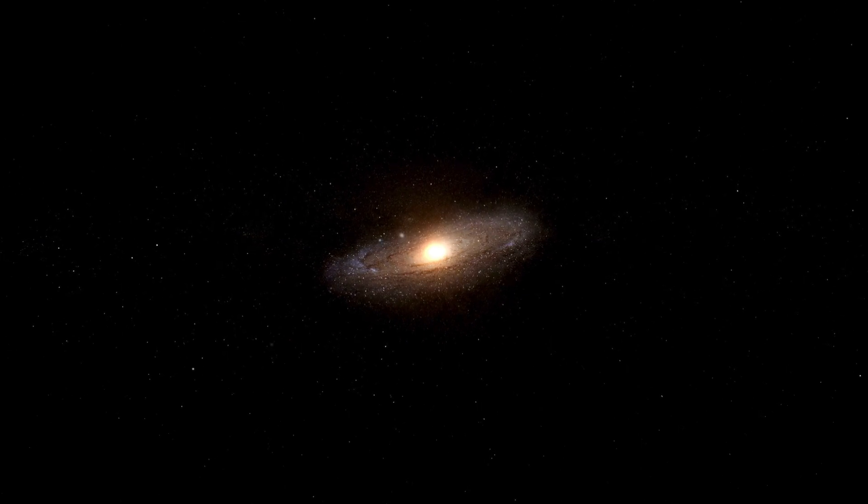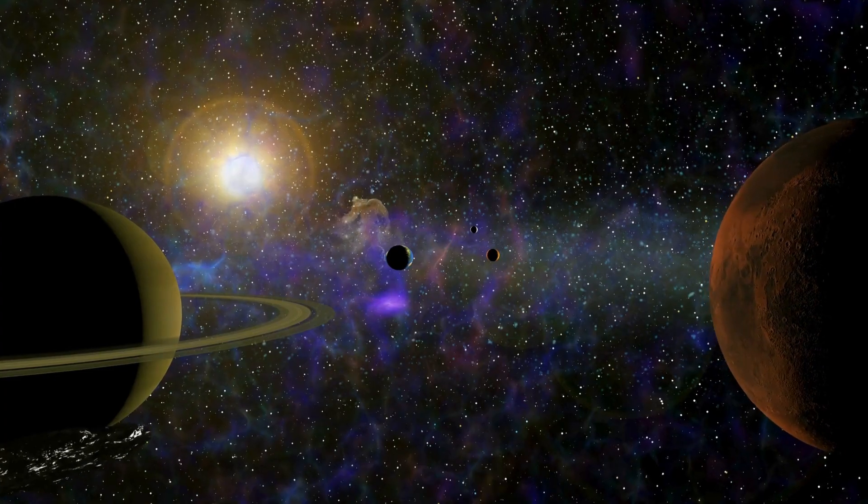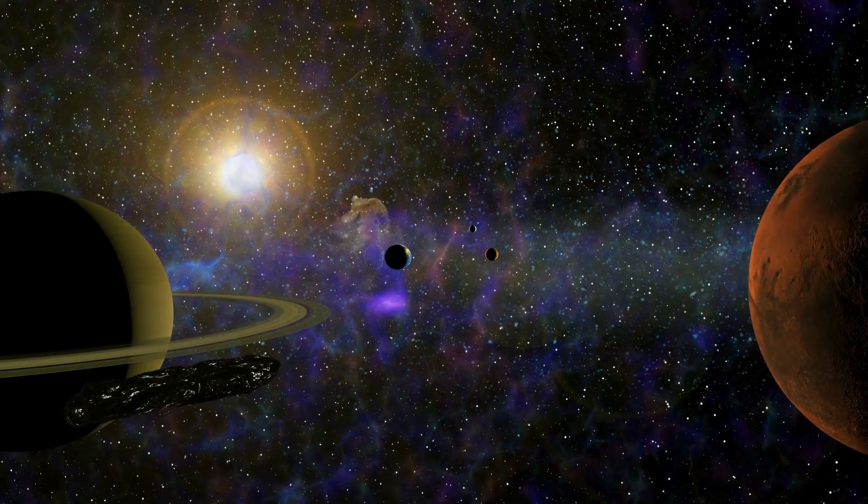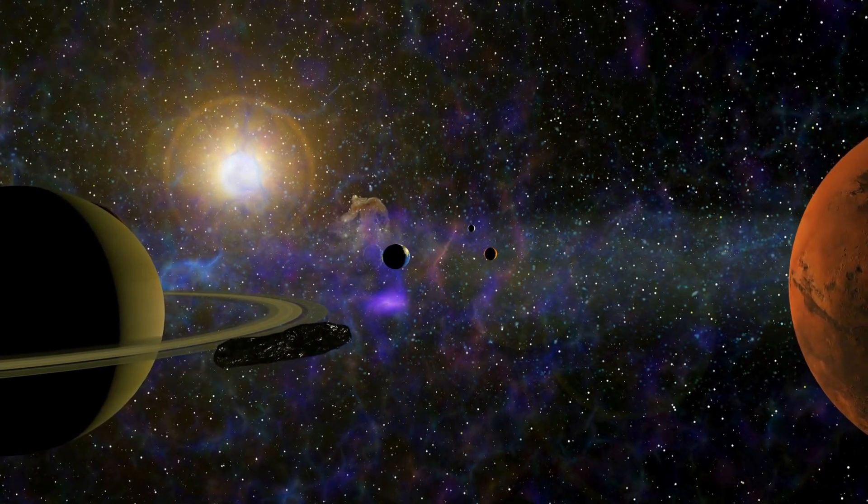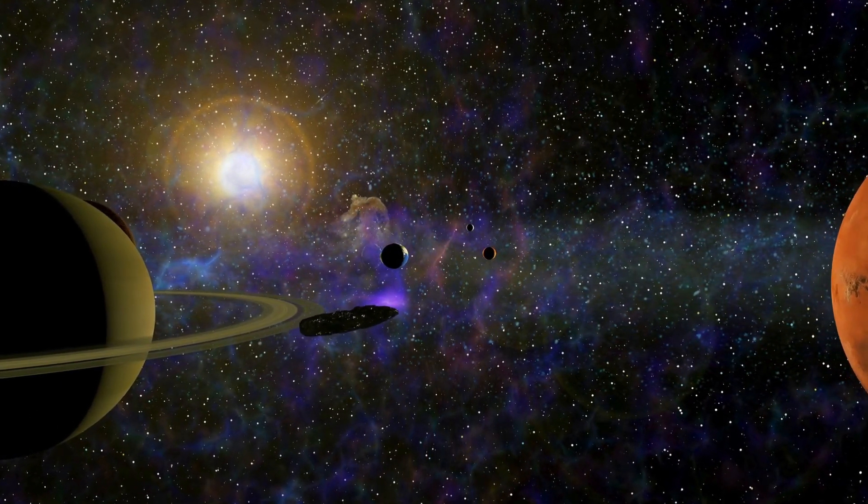In a distant corner of the cosmos, roughly 200 light-years away, an ancient star called HD 14283 resides near the Libra constellation. This stellar traveler moves briskly through space, offering intriguing glimpses into its tumultuous past.